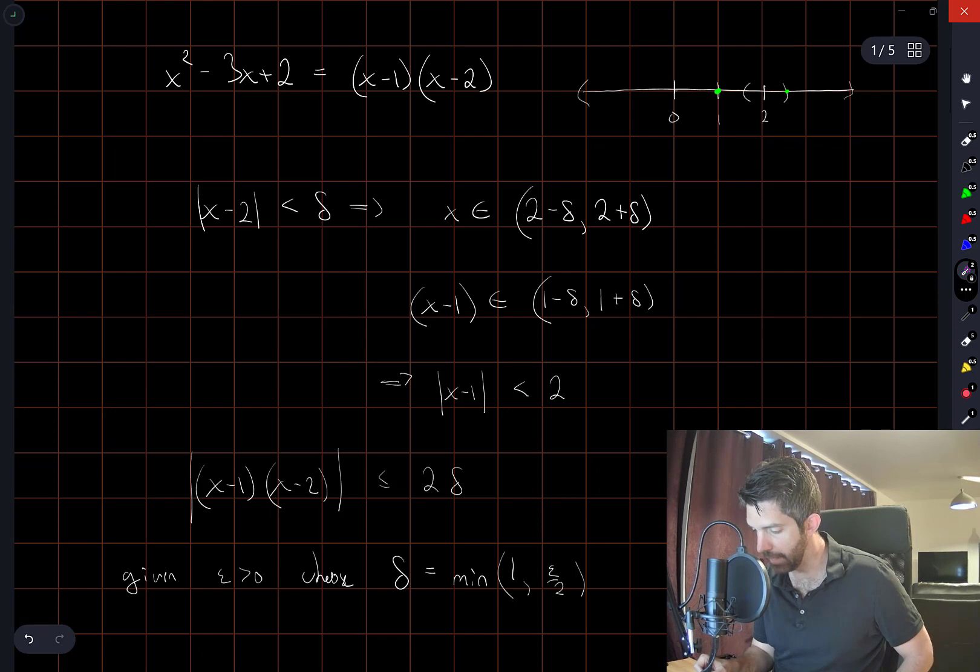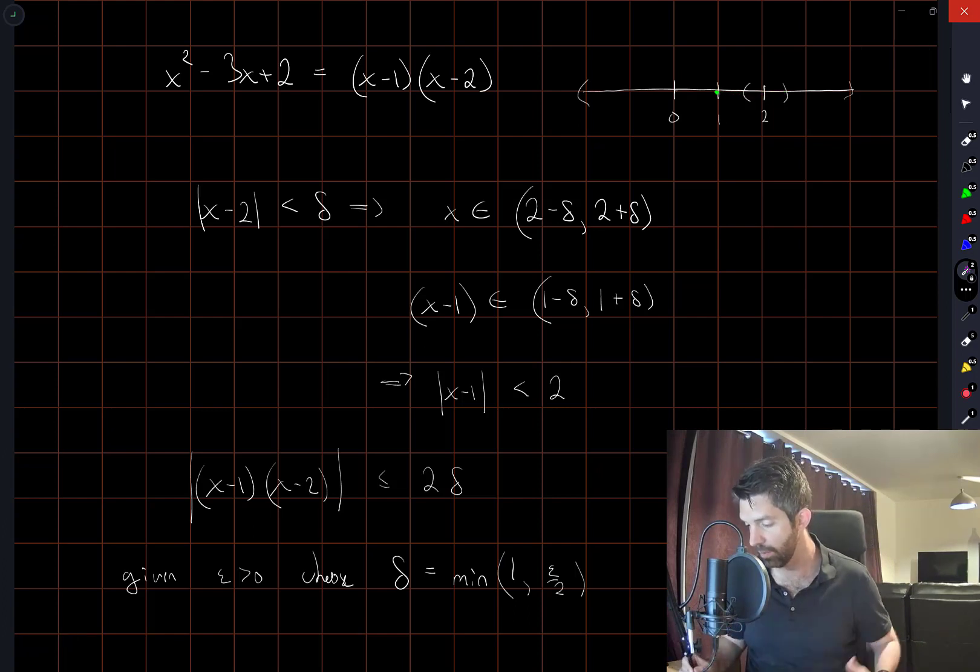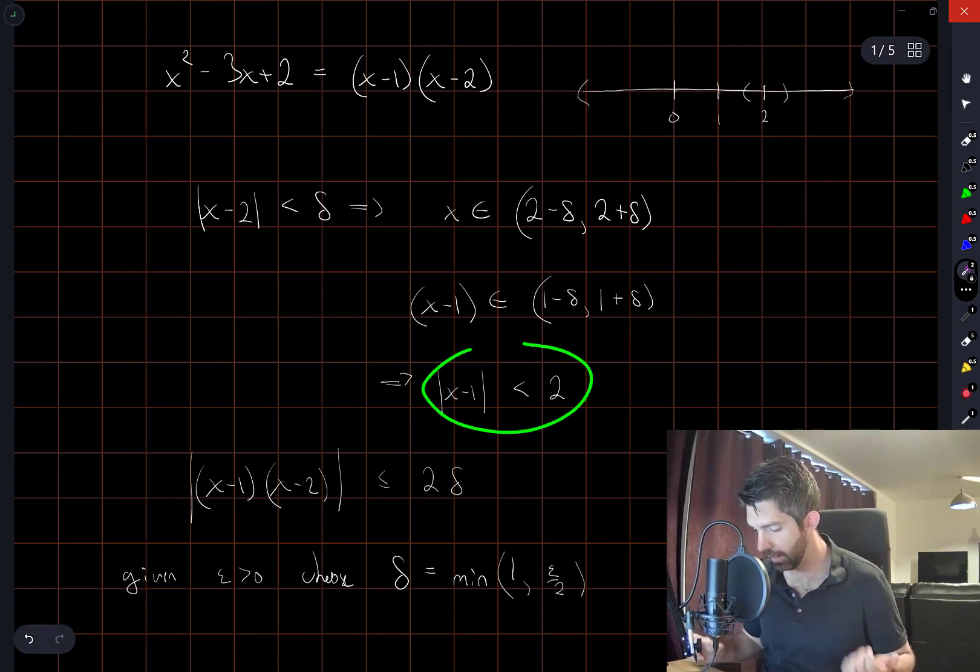this puts a maximum value on x minus 1, right? The distance that x minus 1 is like the distance from x to 1, plus or minus. And so that has a maximum value when x is kind of at this end point. And as long as delta is quite small, that's going to be bounded certainly by 2.